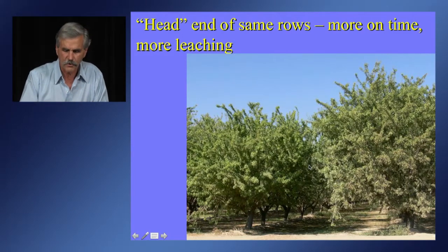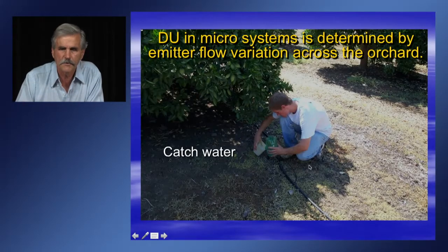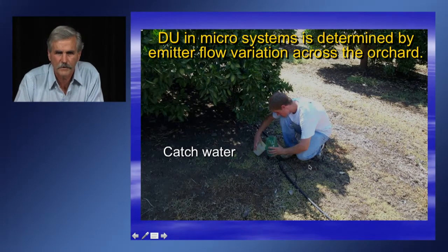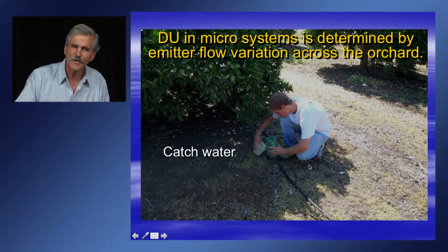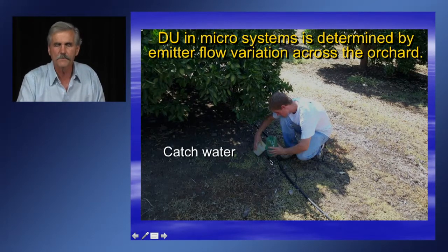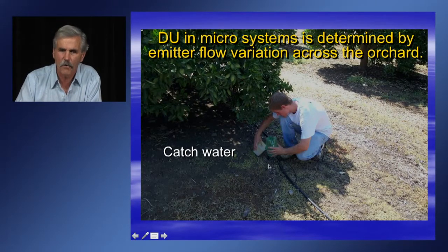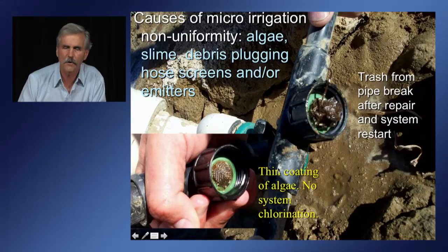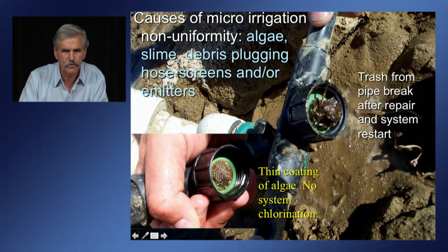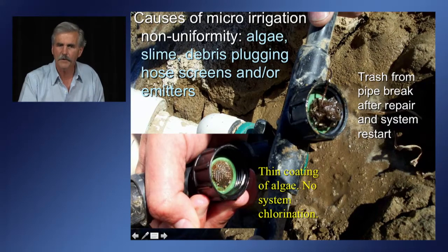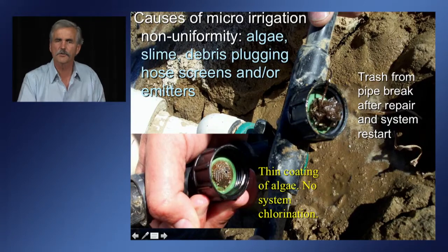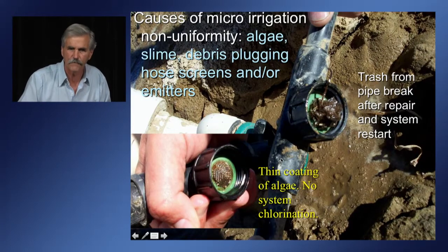In a drip system, to evaluate uniformity you have to go to individual emitters, get down on your hands and knees with a measuring cup or milk jug placed on a fan jet to catch the amount of water, measure it over time across the entire orchard. You also note where hose screens get plugged up with algae and other debris — those screens protect your emitters. If you don't pay attention to sanitation, that can drop pressure in the hoses and give you bad uniformity over time.